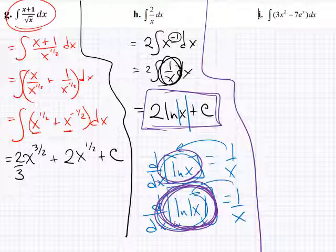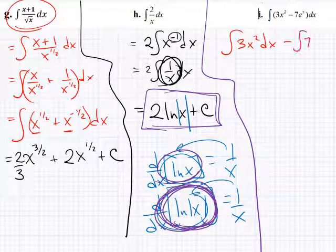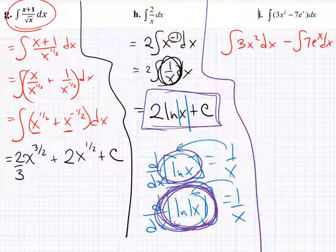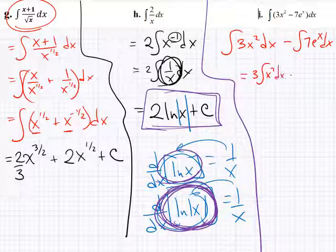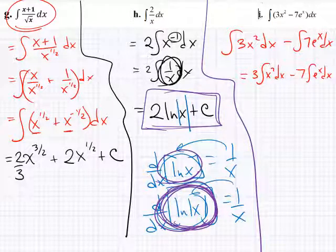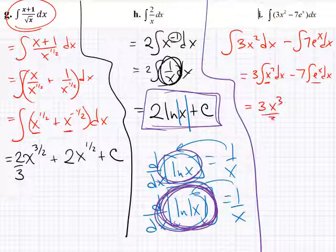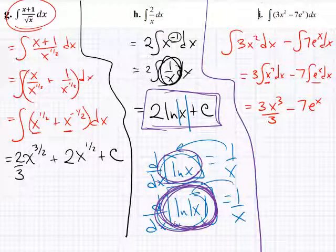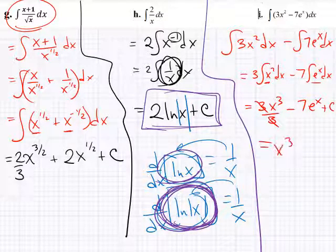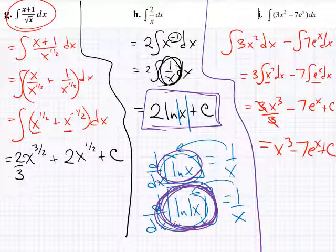For the integral of 3x squared minus 7e to the x dx, split it: integral of 3x squared dx minus integral of 7e to the x dx. Pull out the constants: 3 times integral of x squared, minus 7 times integral of e to the x. The first is a power rule giving 3x cubed over 3, and the second is e to the x. The 3s cancel, so the answer is x cubed minus 7e to the x plus c.